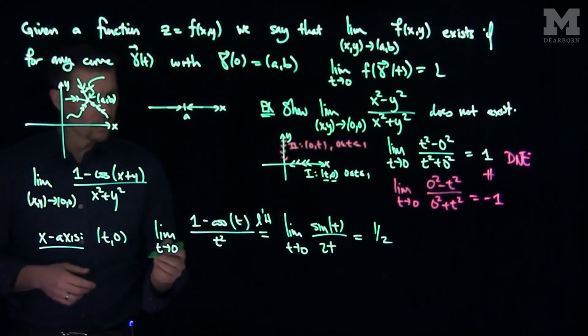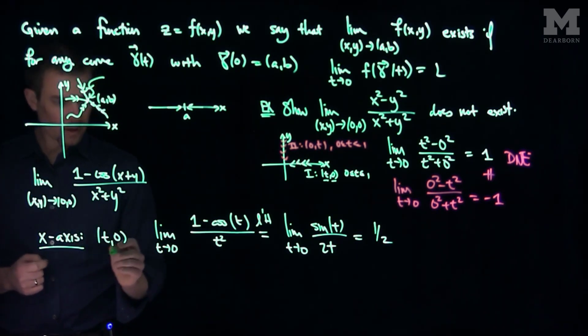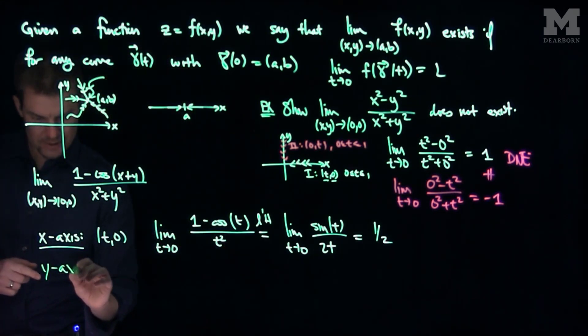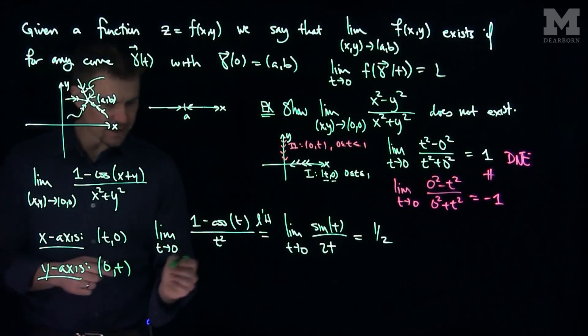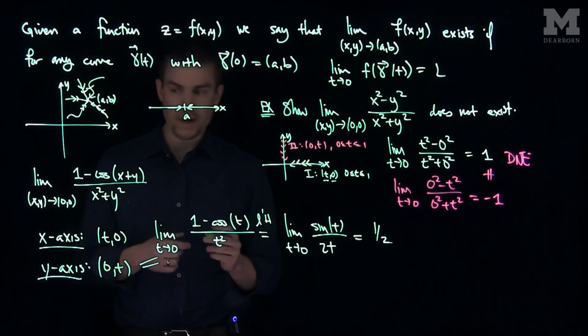Now, we can look at the limit along the y-axis. Along the y-axis we'll see we'll get exactly the same expression along the y-axis. We have 0 comma t, and we'll see it's exactly the same as this limit over here. So along the y-axis we also go to 1 half.